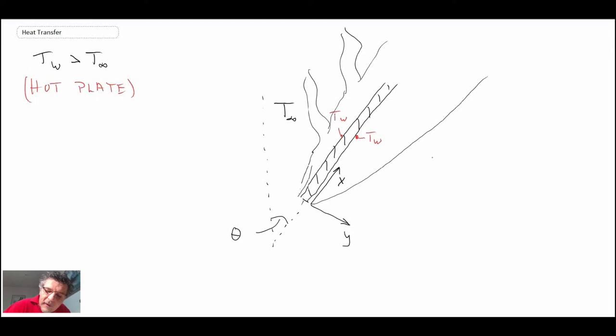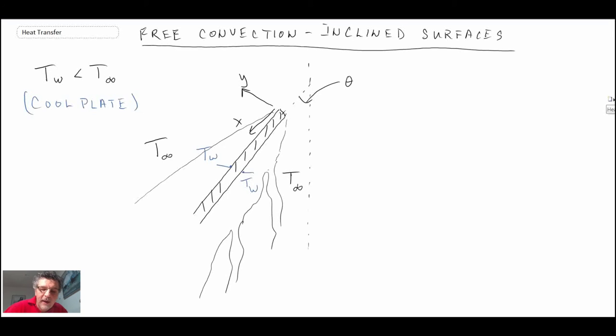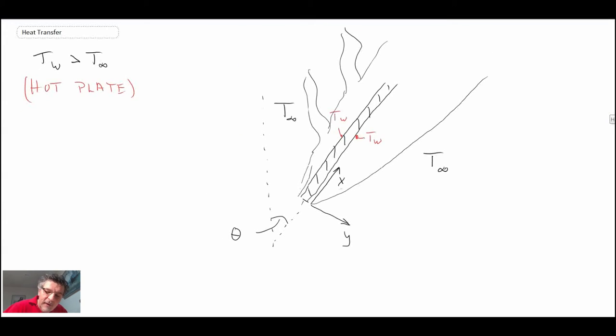Depending upon what surface you're looking at and if the plate is heated or cooled, you have to be a little careful in terms of the application. There is a slight modification to the correlations. You'll notice that I have indicated the coordinate system both for the cool plate on the upper side of the plate because that is where the correlation works. And for the heated plate, I put it on the bottom because that is where the correlation would work.